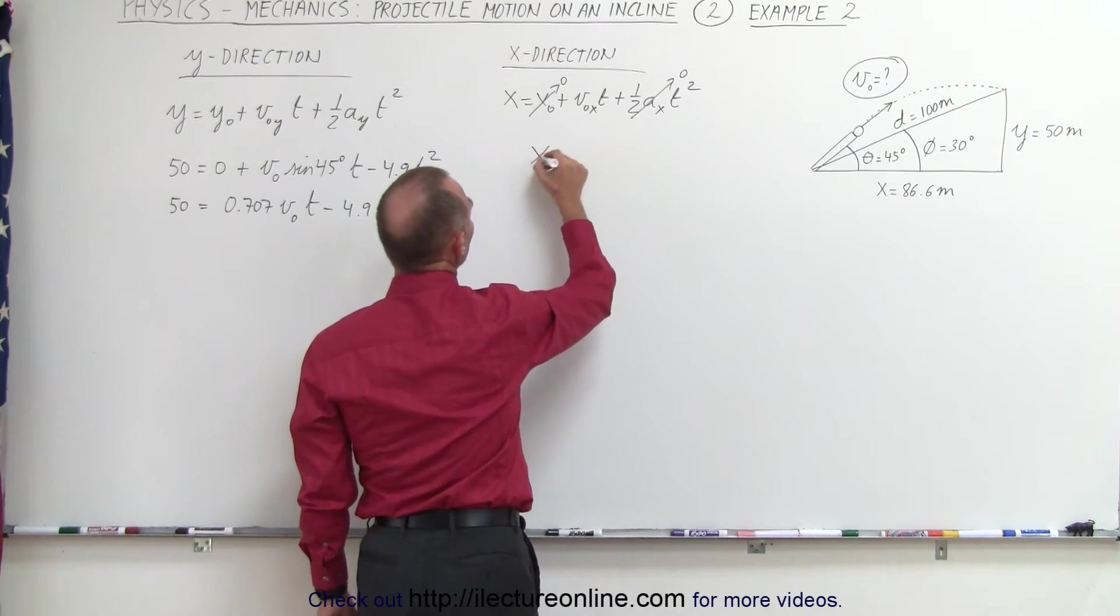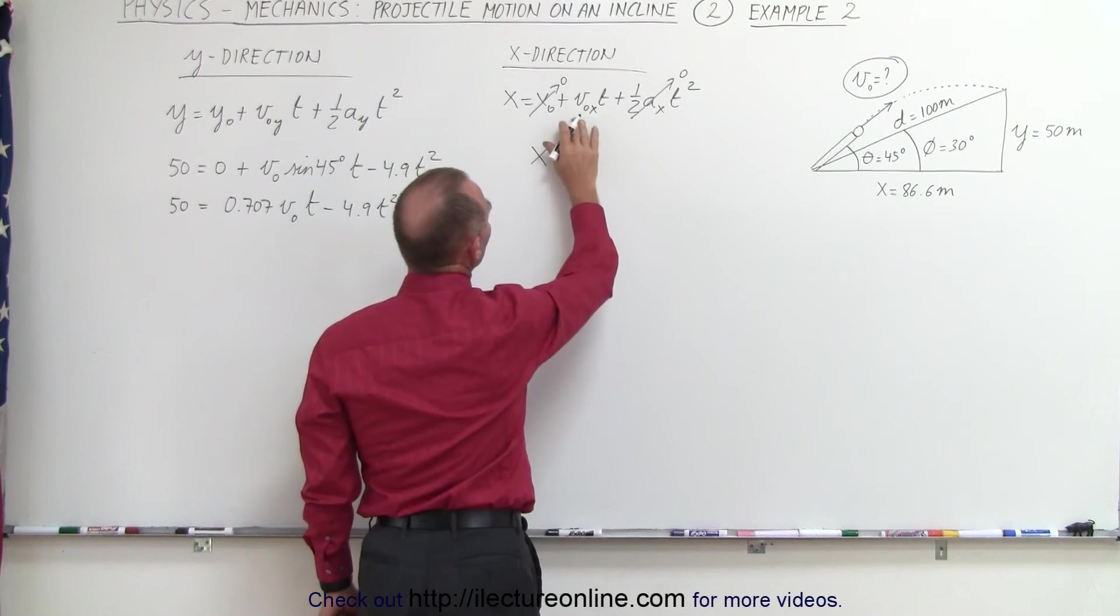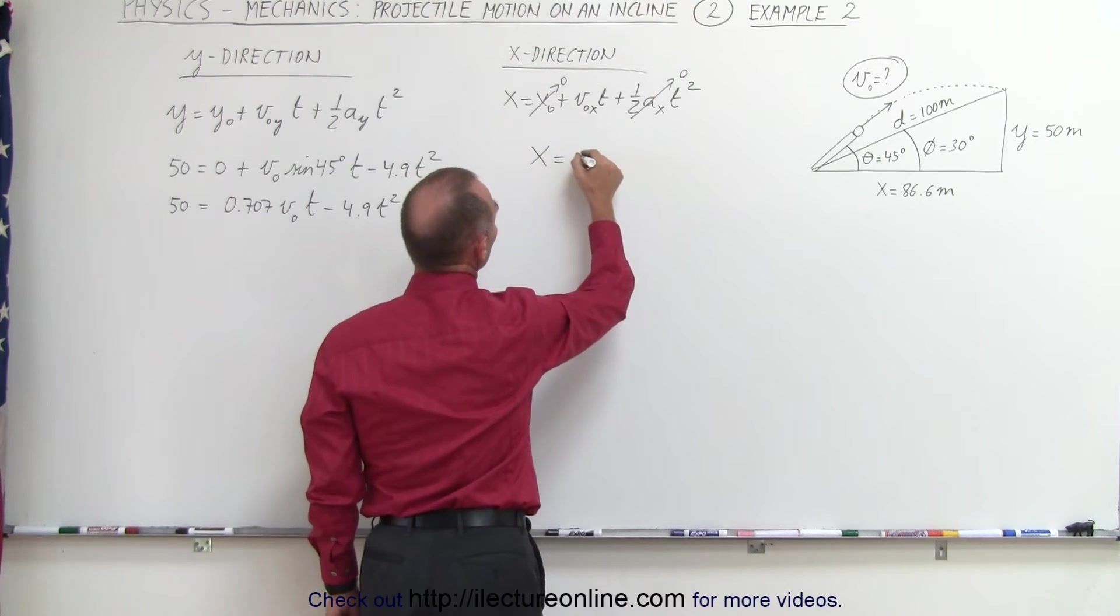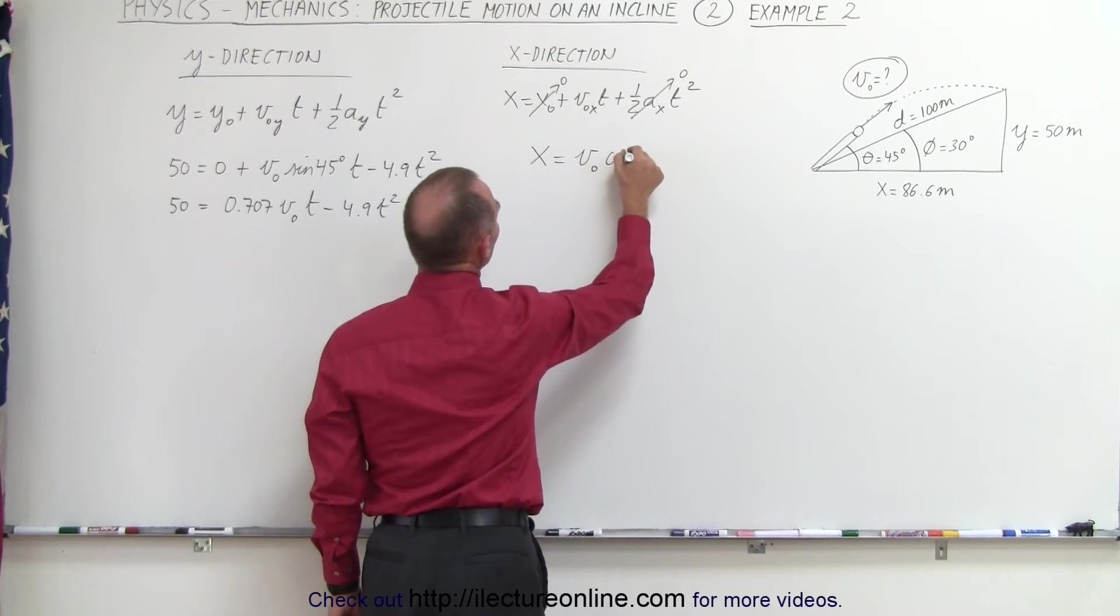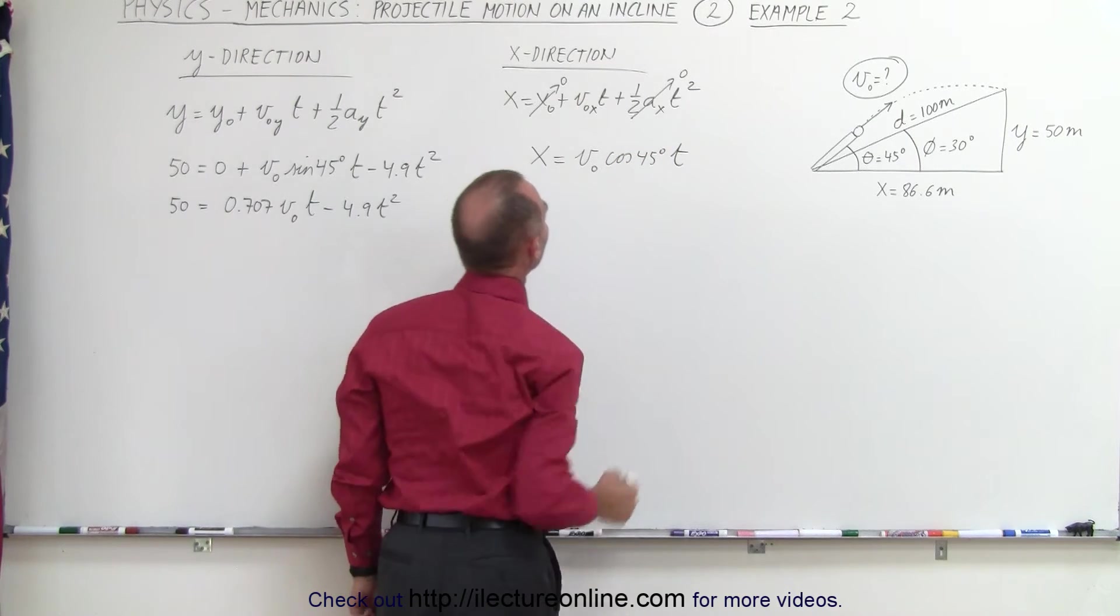The equation simplifies to x equals v initial in the x direction, which would be v initial times the cosine of 45 degrees times time.